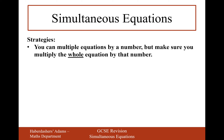You can multiply equations by a number, but make sure you multiply the whole equation by that number. For example, if we've got 2x plus 3y equals 9, then we can multiply the whole equation by 2 — as long as we multiply all the numbers by 2, it remains an equivalent equation. So multiply the 2 by 2, you get 4; multiply the 3 by 2, you get 6; multiply the 9 by 2, you get 18. These two equations are equivalent — one is just a scale factor of the other.